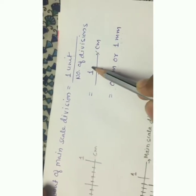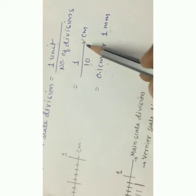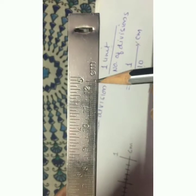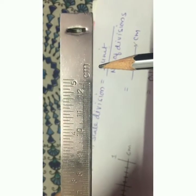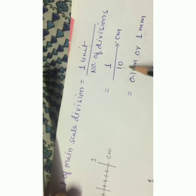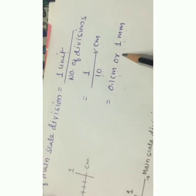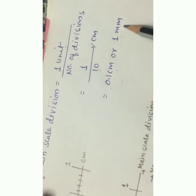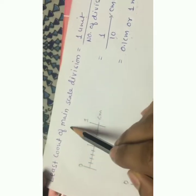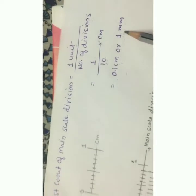So I take 1 unit at the top and 10 at the bottom. As the scale is in centimeters, 1 divided by 10 equals 0.1 centimeters, or 1 mm. So the least count of the main scale is 1 mm.